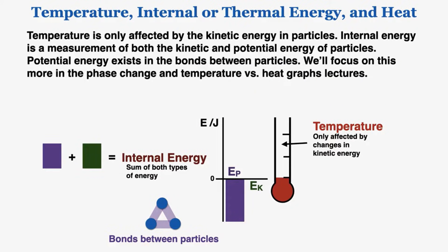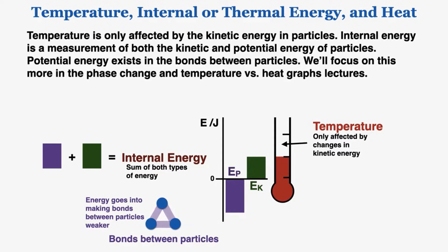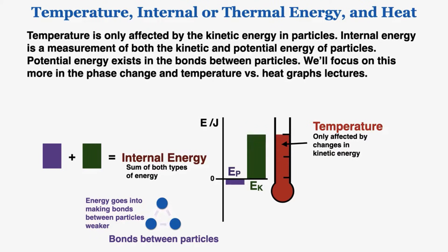This last note is a little complicated and we'll talk about it more in future videos. Temperature is only affected by the kinetic energy in particles, but internal energy is a measurement of both the kinetic and potential energy of particles. Potential energy exists in the bonds between the particles holding them together. We can make a graph of the kinetic and potential energy of a material. If I change the kinetic and potential energy, you'll notice that temperature is only affected by the kinetic energy — when I change the potential energy, that changes the bonds between particles but it doesn't change the temperature. So temperature is only a measurement of kinetic energy, whereas internal energy measures total potential and kinetic energy together.